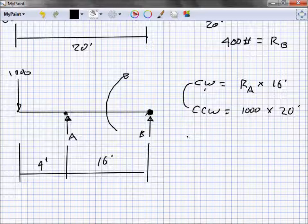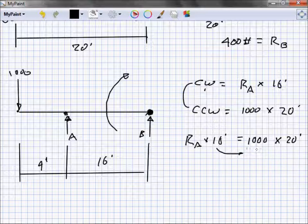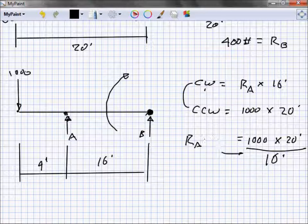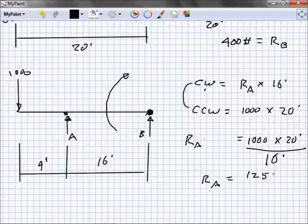We know those are equal, so my reaction at A times 16 feet equals 1,000 pounds times 20 feet. Algebra tells me I put this 16 feet down here. What's reaction at A? 1,250 pounds, sounds about right.